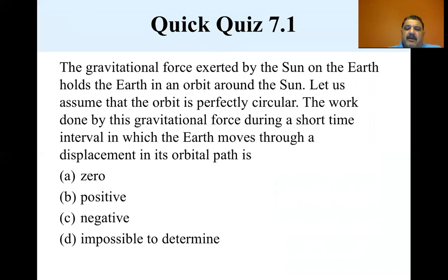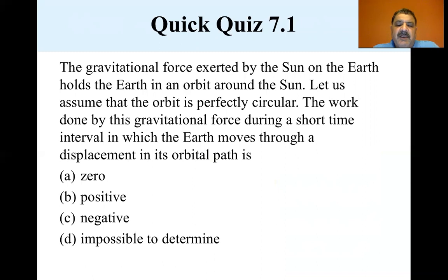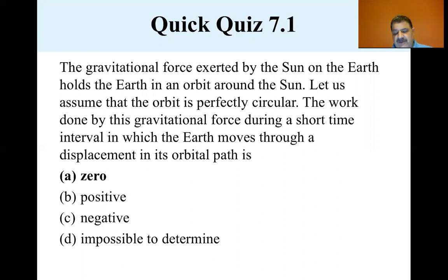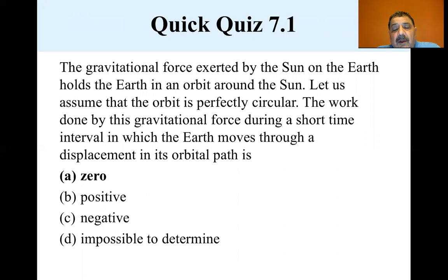Quick quiz: The gravitational force exerted by the sun on the earth holds the earth in orbit. Assuming the orbit is perfectly circular, the work done by this gravitational force during a short time interval in which the earth moves through a displacement in its orbital path is: A) zero, B) positive, C) negative, or D) impossible to determine. The answer is zero — the force does no work on the earth because the gravitational force is pointed toward the center of the circle and is therefore perpendicular to the direction of displacement. The tangential velocity is perpendicular to the centripetal acceleration, so no work is done.